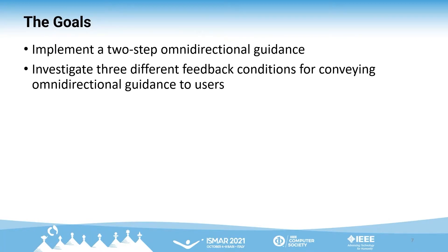Inspired by this finding, we proposed a two-step omnidirectional guidance so that horizontal or vertical direction is provided one at a time, based on the shortest Cartesian distance instead of guiding users based on the Euclidean distance. We conducted a user study with a target finding task to investigate three different feedback conditions for conveying omnidirectional guidance to users.